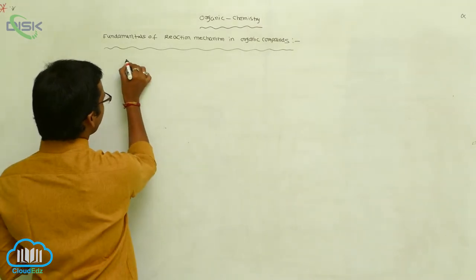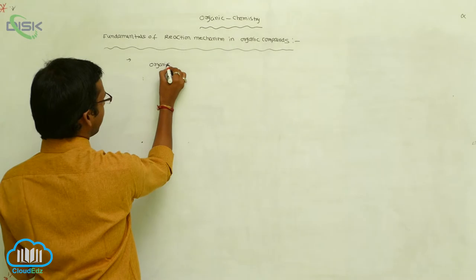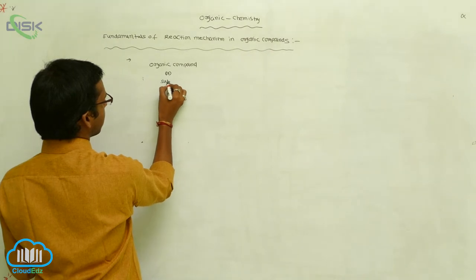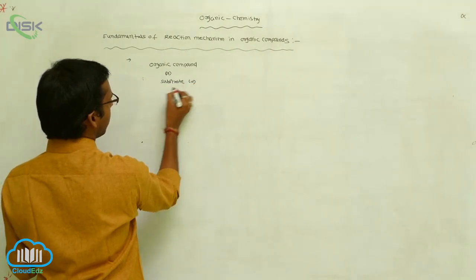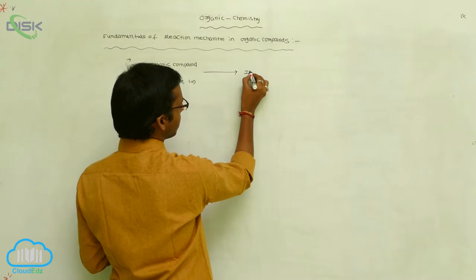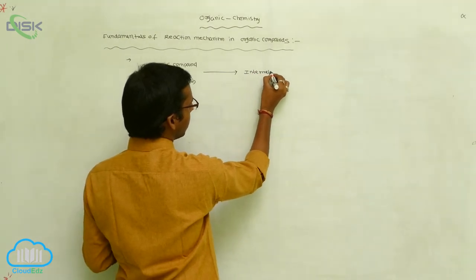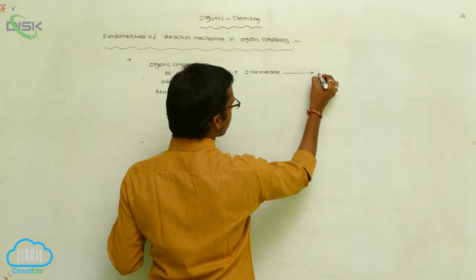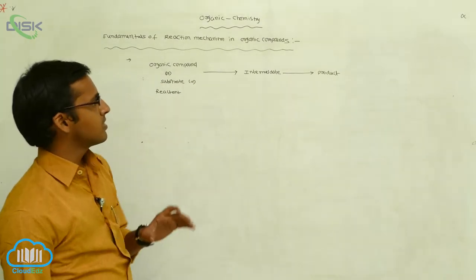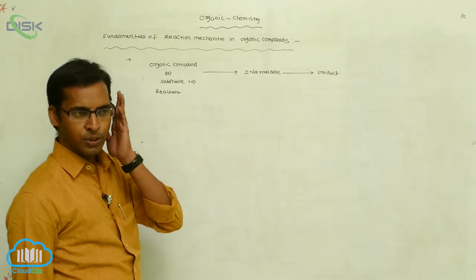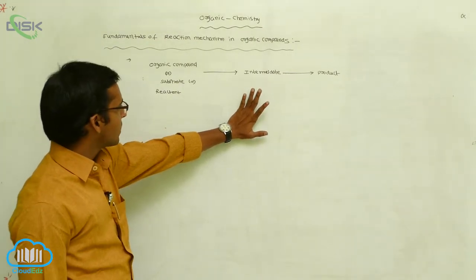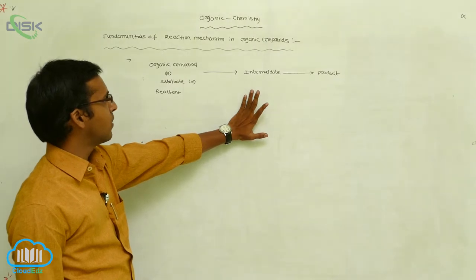Generally in organic compounds, the reactant — also called substrate — is first initially converted to an intermediate, and finally gives the product. So in organic compounds, the reactant is not directly converted to product; it is initially converted to an intermediate, then finally gives the product. These are the steps involved in the reaction mechanism of organic compounds.